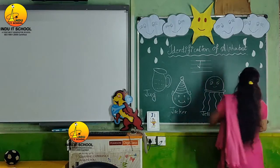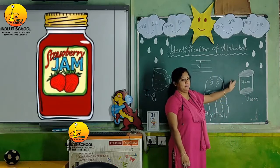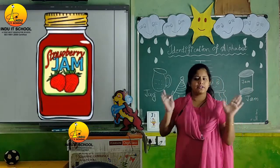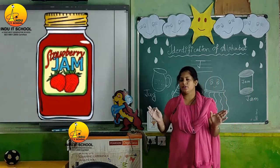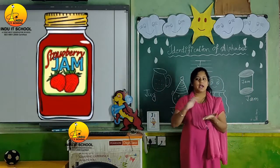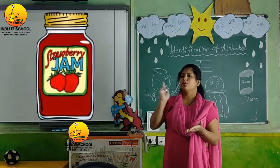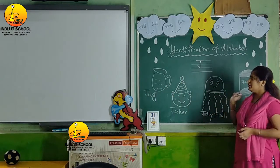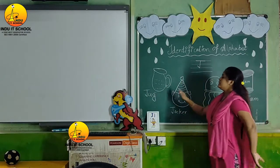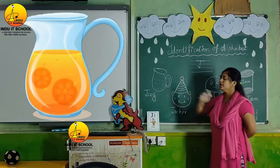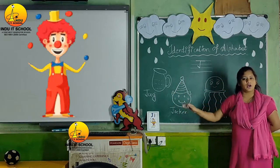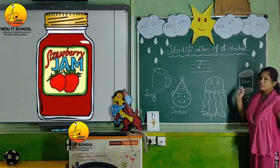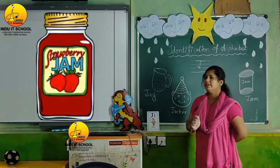And the last object is J for jam. We eat bread with jam. Okay, learn it properly.